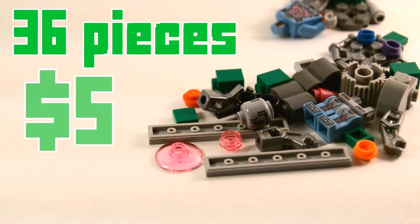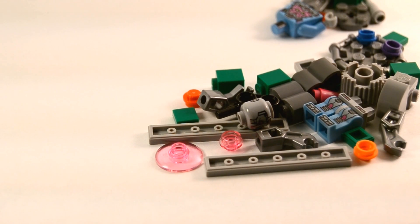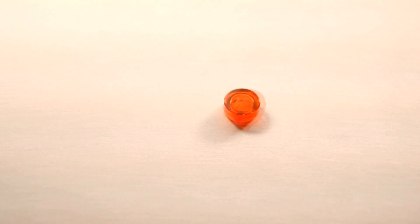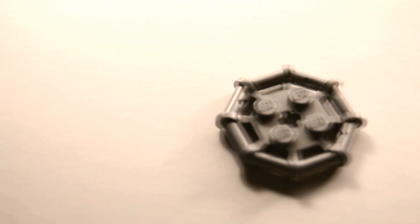With a total of 36 pieces at $5, it's 14 cents a piece. Out of the given pieces, the noteworthy parts are the trans-red flat rounded tile, the assorted pink parts, and even a silver hexagonal piece.